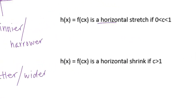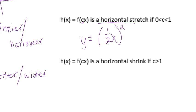Now let's look at horizontal transformations. The difference is that c is inside the x — you're plugging in c times x for all the x's. For example, y equals (one-half x) squared. This is going to be a horizontal stretch, where you pull it from left to right, making it wider.